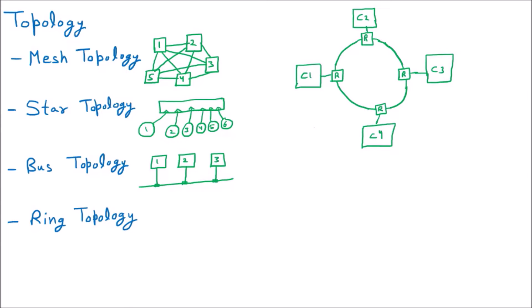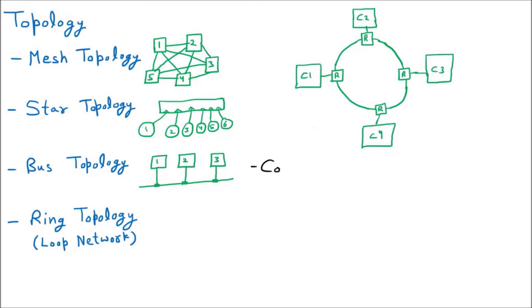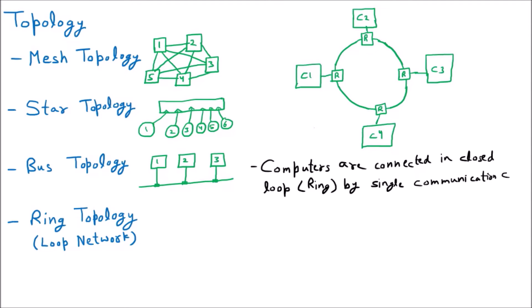In ring topology, computers are connected in a closed loop, so another name for ring topology is also called the closed loop or loop network. Whenever something goes and comes back to the same point, that is called a loop. So if somebody asks in an examination what is the closed loop or loop network, that is the ring topology. The first and foremost thing about ring topology is that computers are connected in a closed loop — that is, in a ring — by a single communication cable through which all the computers are connected.